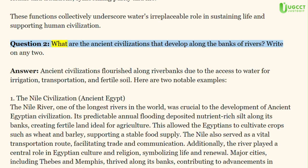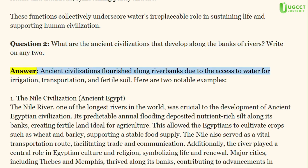Question 2: What are the ancient civilizations that developed along the banks of rivers? Write on any 2. Answer. Ancient civilizations flourished along river banks due to the access to water for irrigation, transportation, and fertile soil. Here are two notable examples.